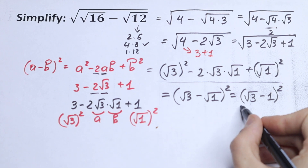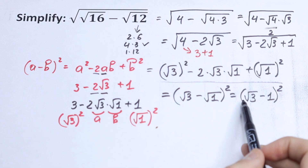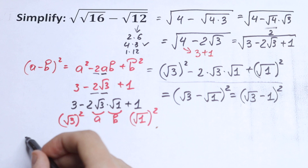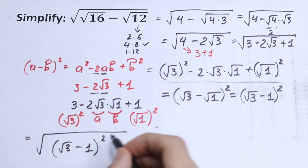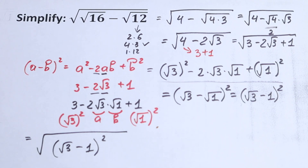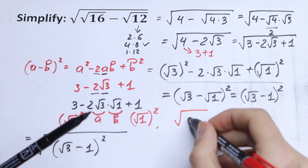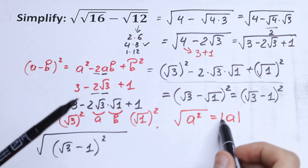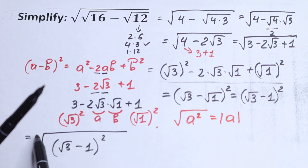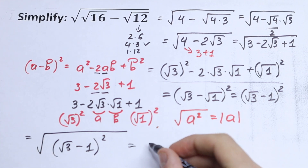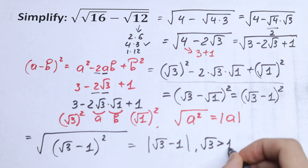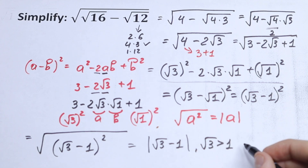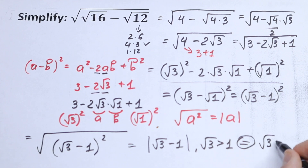So the expression under our outer square root equals (√3 minus 1) squared. We write the final answer as the square root of (√3 minus 1) squared. Everyone knows that the square root of a squared equals the absolute value of a. So the square root and the square cancel, giving us the absolute value of (√3 minus 1). Since √3 is greater than 1, the expression is positive, so the final result is √3 minus 1.